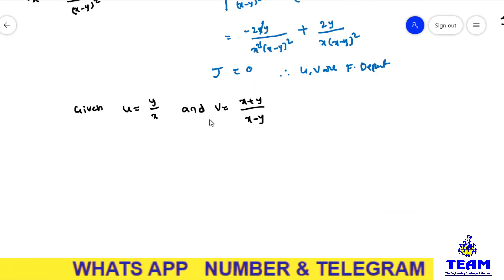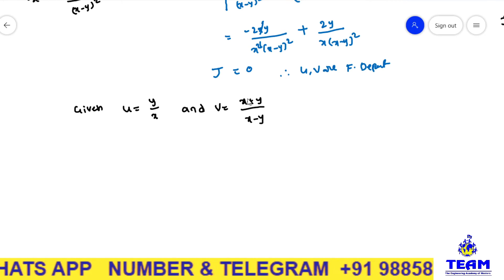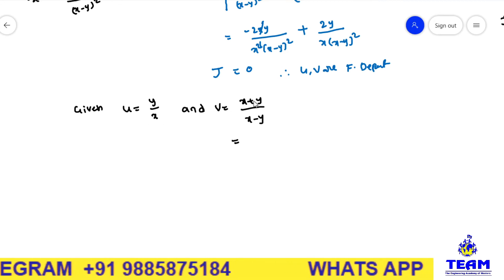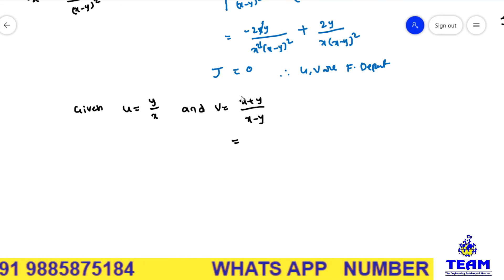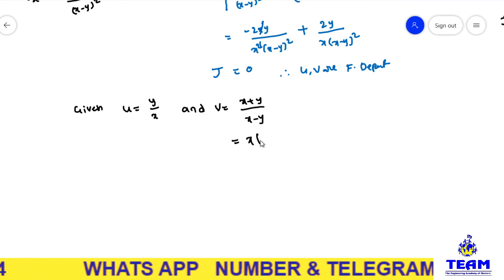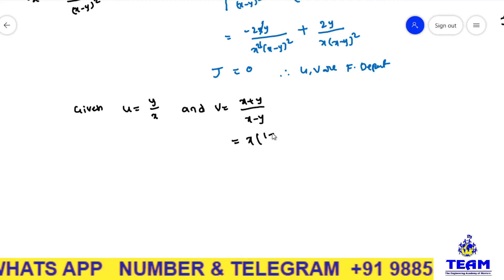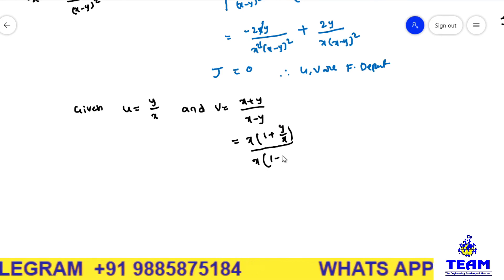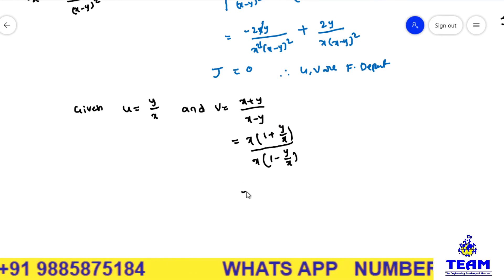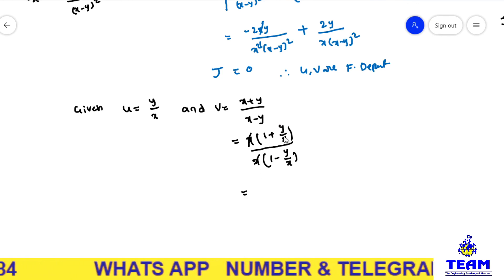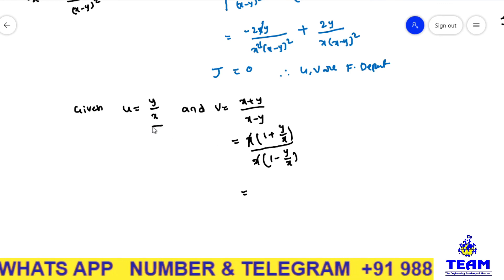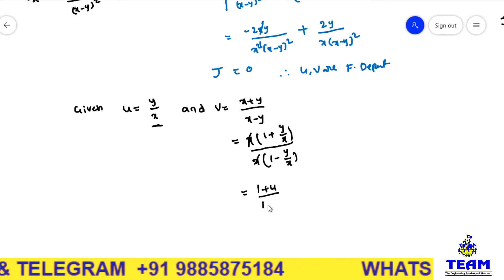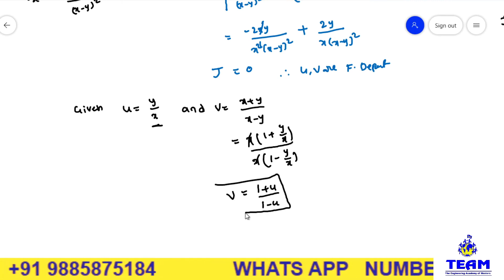Given that u is equal to y by x and v is equal to x plus y by x minus y. Here you observe: y is in the numerator and x is in the denominator in u. In v, both x and y appear in numerator and denominator. From the numerator, take x as a common to get x times 1 plus y by x. From the denominator, take x as a common to get x times 1 minus y by x. The x's cancel, giving 1 plus y by x divided by 1 minus y by x. Since u equals y by x, this becomes v equals 1 plus u by 1 minus u. This is the relation between u and v.